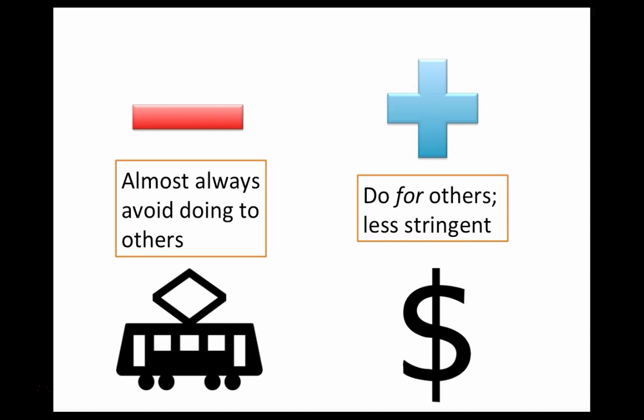Foote argues that the principle of double effect can offer some direction in differentiating between the trolley driver and transplant cases, but she says that a better way to do so is by appealing to negative and positive moral duties. Negative moral duties are duties of non-interference, things you must avoid doing to others. They include things such as duties against stealing or against causing injury or death to others. It seems clear that running someone over with a trolley would violate a negative duty toward them.